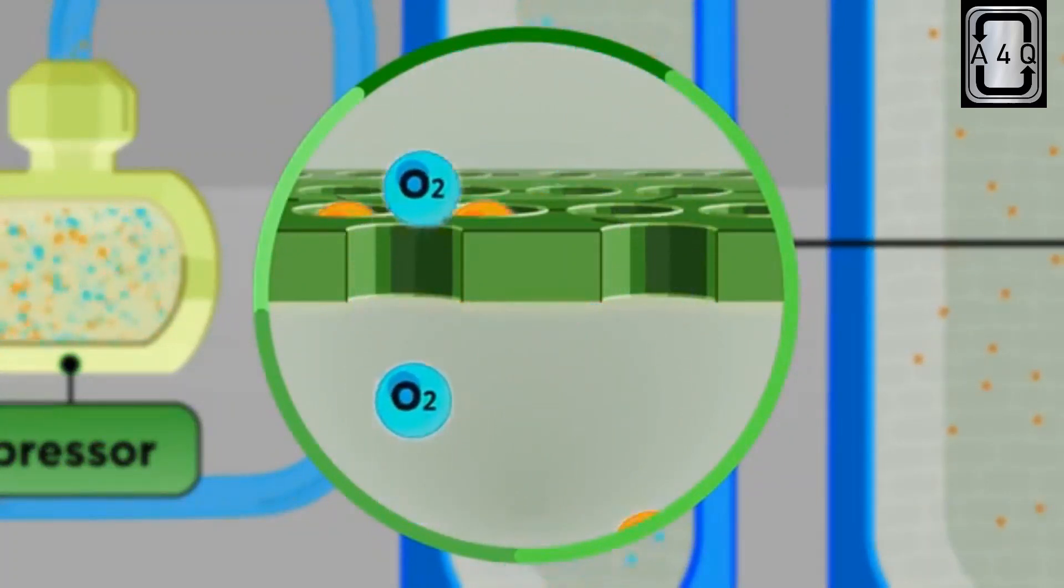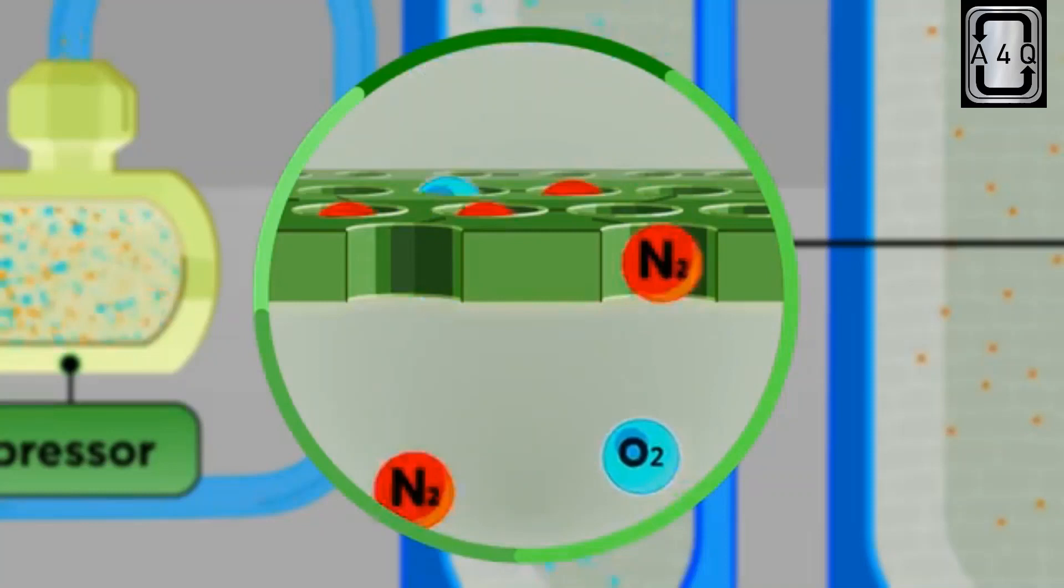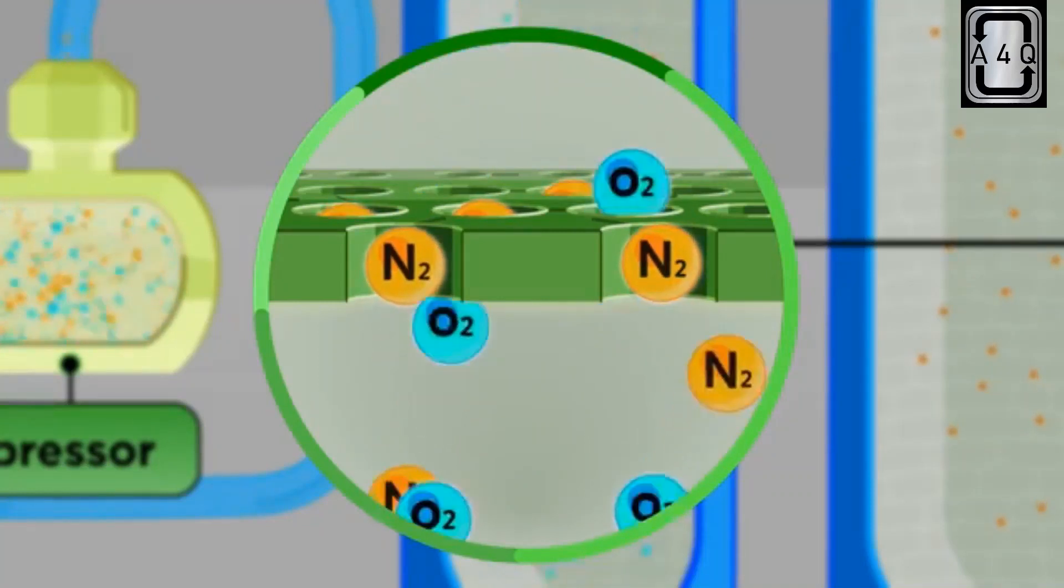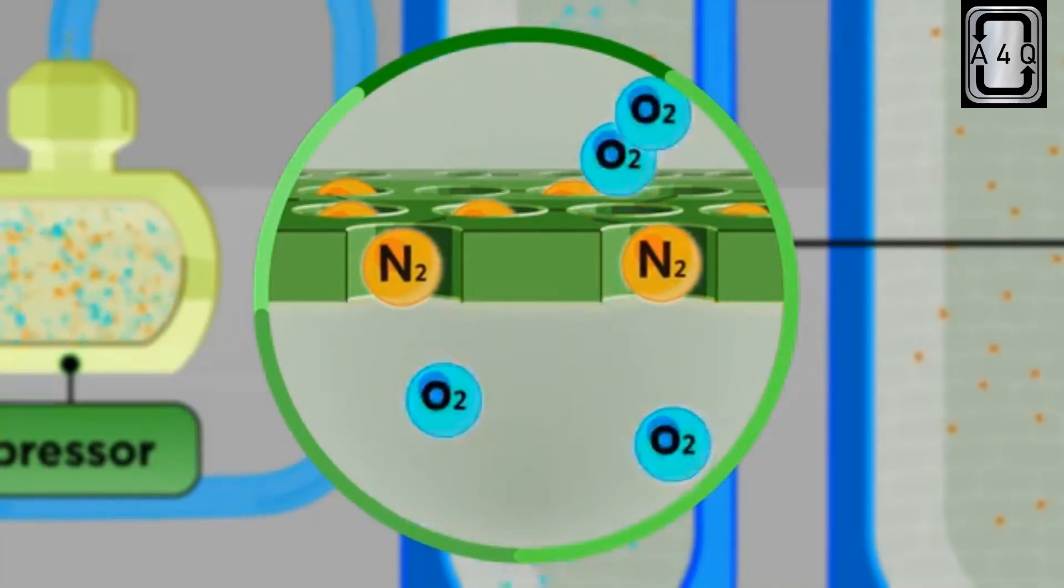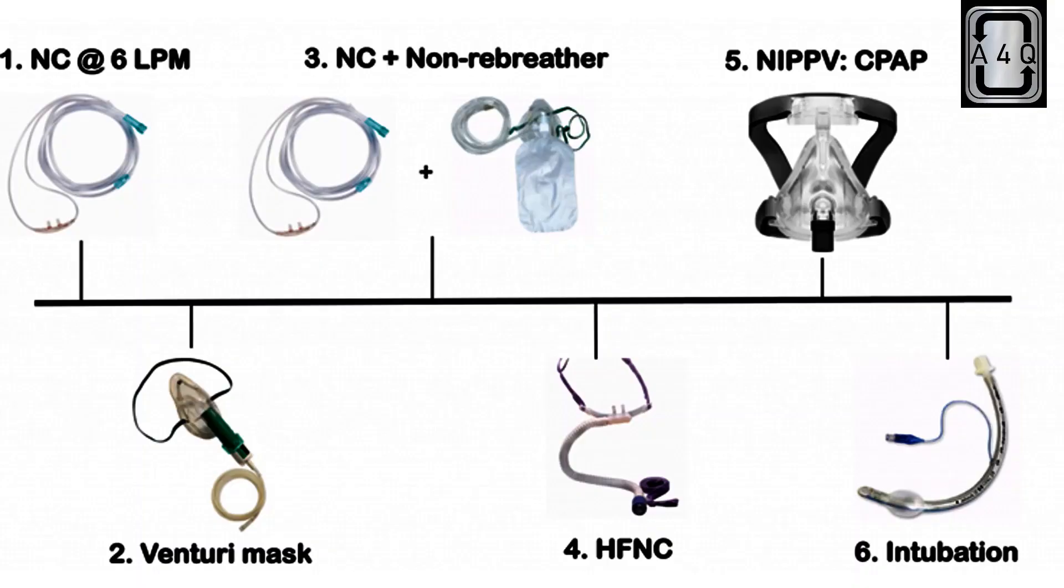So what comes out of the tank is 90 to 95% pure oxygen ready to be supplied to the patient via an oxygen delivery system like nasal cannula, oxygen mask, etc.